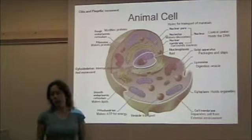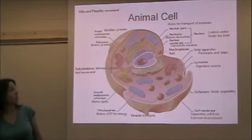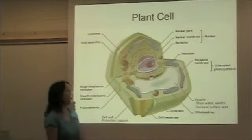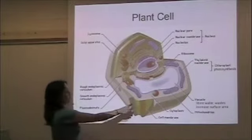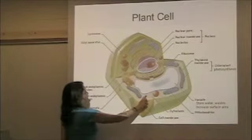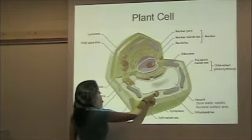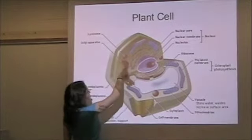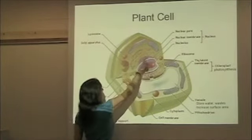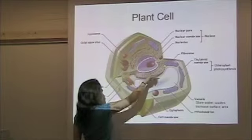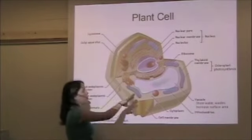Now let's compare the animal cell to another eukaryotic cell, the plant cell. We have a lot of the same structures: the plasma membrane, cytoplasm, mitochondria, vesicles, lysosome, Golgi, smooth ER, rough ER, nucleus with the nucleolus and nuclear envelope, and ribosomes. But there are a couple of additional structures I want to focus on.